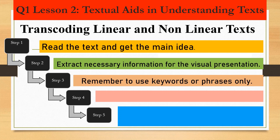Step three: remember to use keywords or phrases only. You don't want to make it look like a linear text, so using keywords or simple phrases is a must. Step four: classify information into categories. This will help you determine the type of textual aid to use.